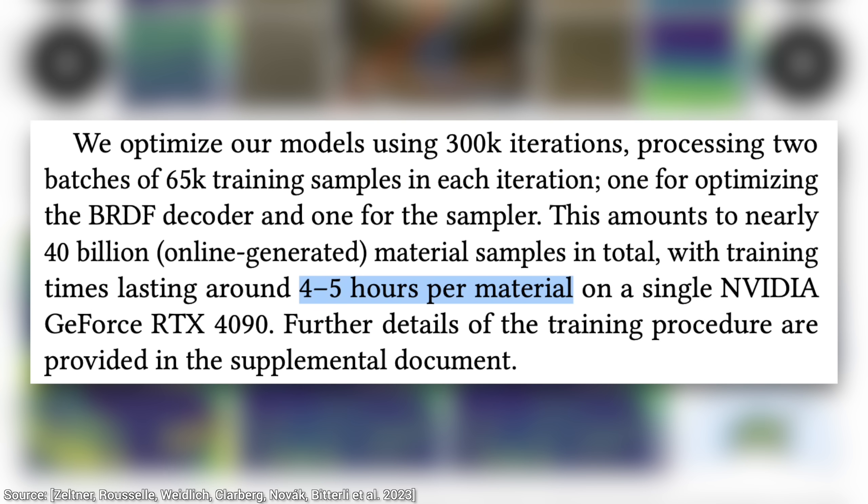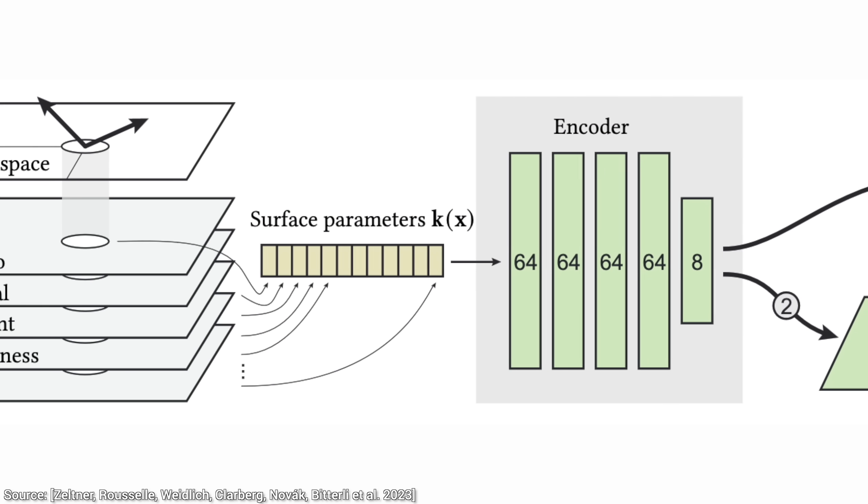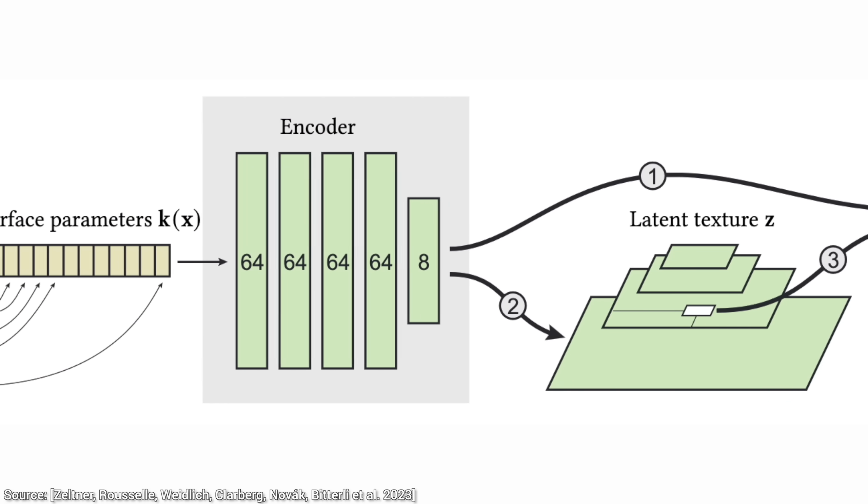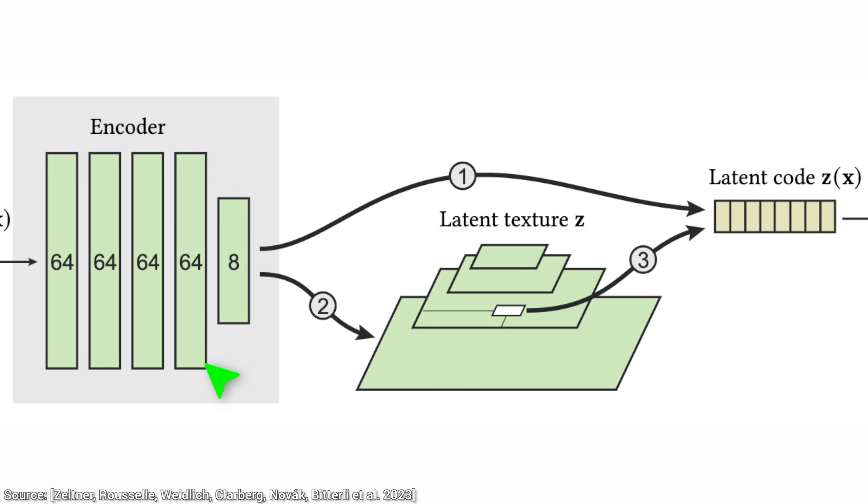4-5 hours per material to train on one commodity graphics card? How is that even possible? Well, let's pop the hood together and take a closer look. Oh yes, the neural network is tiny,